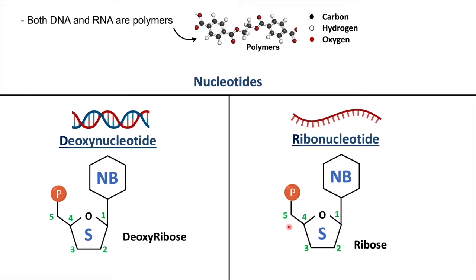The difference between the two sugar molecules — ribose and deoxyribose — is that ribose sugar has two hydroxyl groups attached to carbon-2 and carbon-3 positions of the pentose ring, whereas deoxyribose has only one hydroxyl group, missing the hydroxyl group at the carbon-2 position. Therefore it is called deoxyribose.